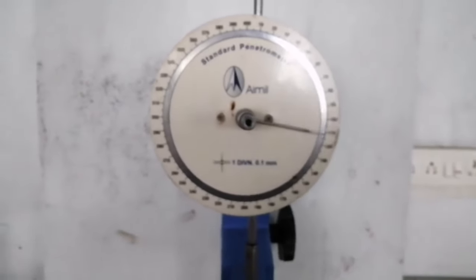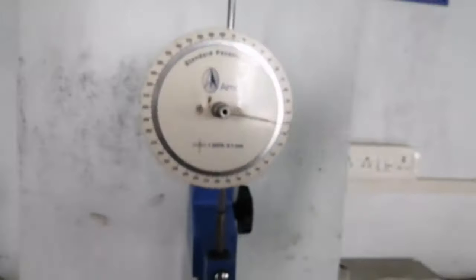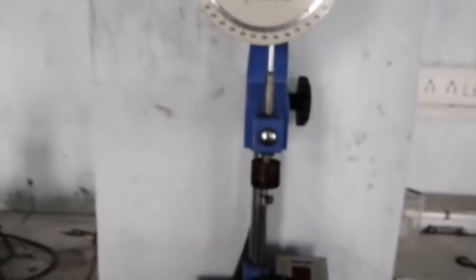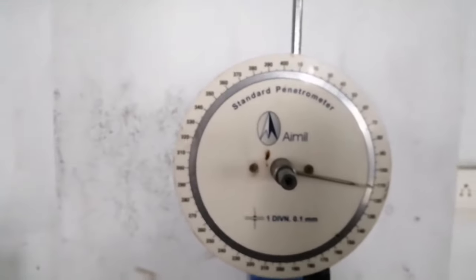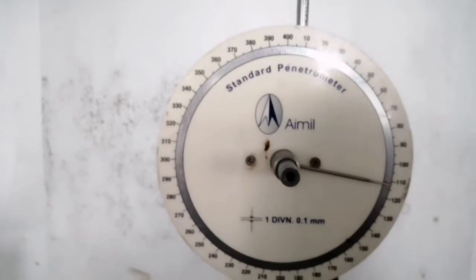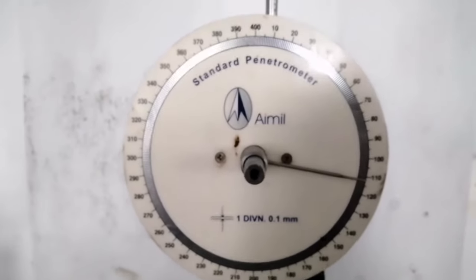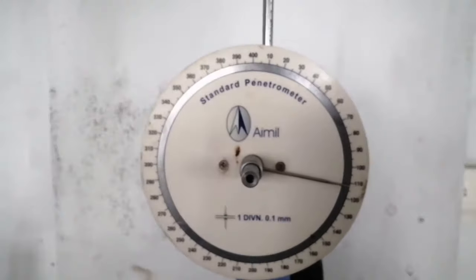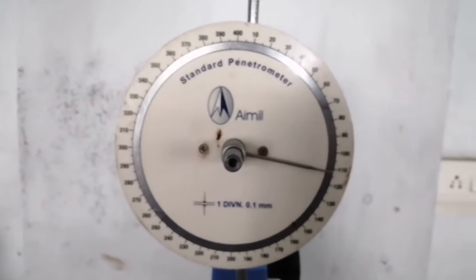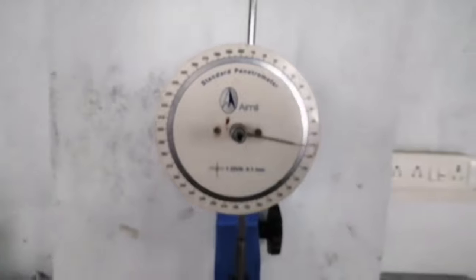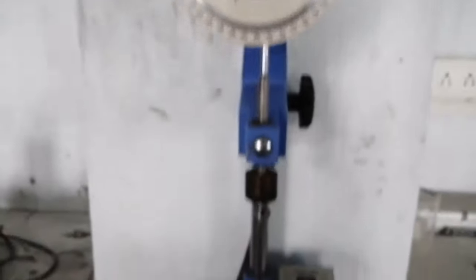In the same manner, we have to do for 3 to 5 times for the same sample. Next, we have to take the average of all the penetration of this sample. We will get the average result of this bitumen sample what we have taken. This is regarding the penetration test using standard penetrometer.